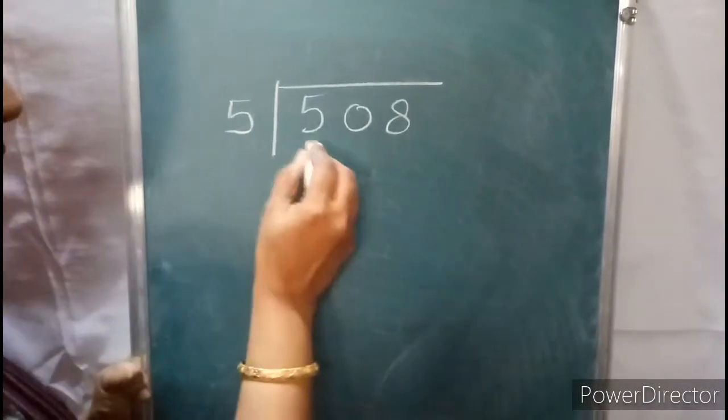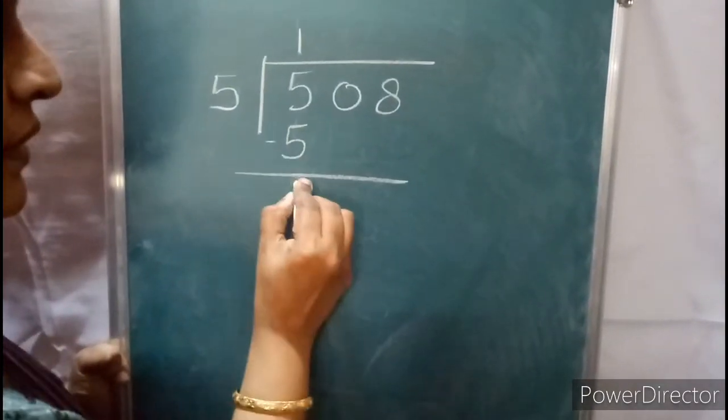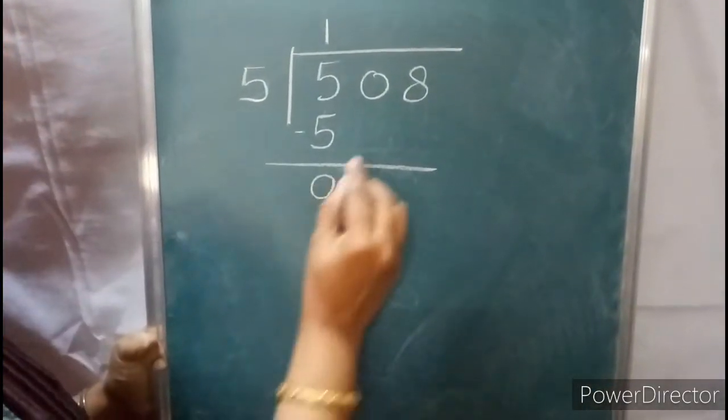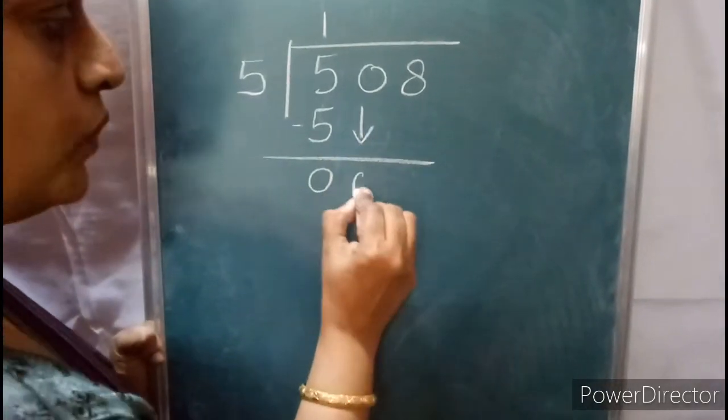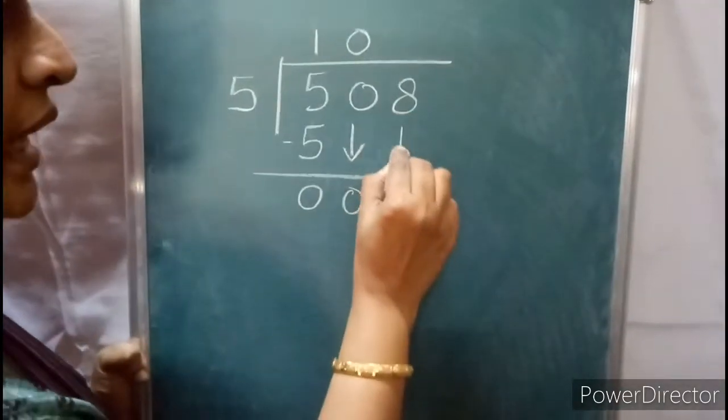First, take the first digit, 5. 5 ones are 5. What is the remainder? 5 minus 5 is 0. Now take this 0. In 0, 5 zeros are 0. Now take this 8.